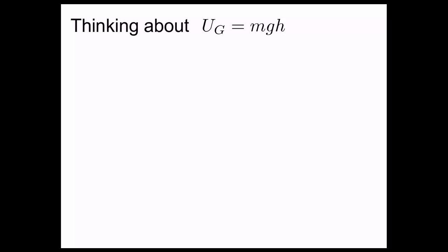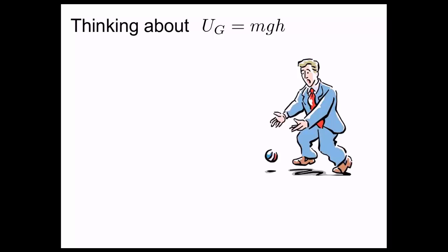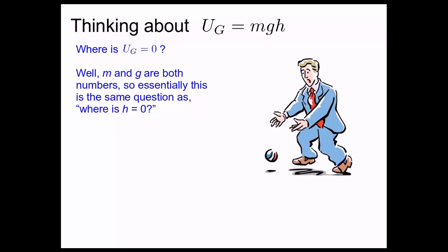Let's think about this quantity of gravitational potential energy written as mgh. Here we have Mr. Clumsy dropping a ball. Where is the gravitational potential energy of the ball equal to zero? Well, m and g are both numbers. m is the mass of the ball, and g is 9.8 meters per second squared. So essentially, this is the same question as, where is height equal to zero, h?